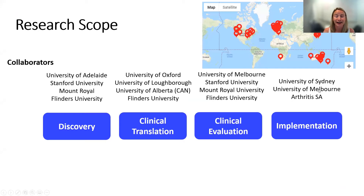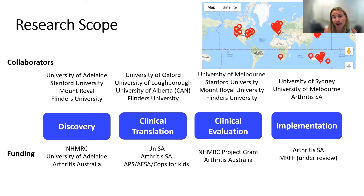Our main areas of funding tend to come from NHMRC and things like Arthritis Australia. What I wanted to talk to you about today is to give you some examples of the work that we're doing in each of these research theme areas, to give a sense of potential collaborative opportunities.